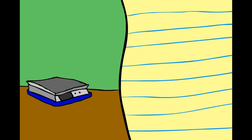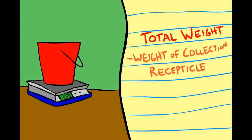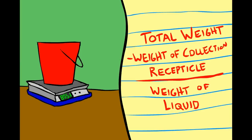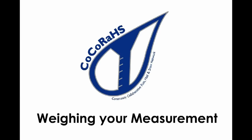Here's a good tip. If you weigh the snow to measure, you can pre-weigh your collection receptacle and subtract it from the total weight just as you've done with the outer cylinder for your other measurements. Watch the weighing your measurement video if you need a refresher.